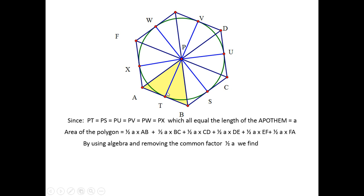So, the area of every triangle would be one-half the apothem times the base. So, the yellow triangle here would be one-half of A times base AB. The next triangle would be one-half of A times BC.